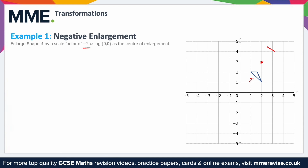Using (0, 0) as the centre of enlargement — that's just the origin. We need to draw some lines to help with the enlargement. Pick a point on the shape, connect it to our centre of enlargement, and then extrapolate the line through, carrying it on to fill the rest of the graph. The point on the shape has been connected to the centre of enlargement and carried on through so we can use it in the lower quadrant. Repeat this process for the other two points on the shape.